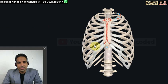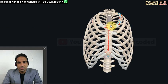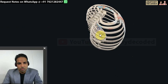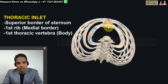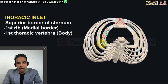Now let's see the boundaries of the thoracic inlet and the outlet. The upper opening is the thoracic inlet. The boundaries of the thoracic inlet are: on the anterior aspect, the superior border of the sternum, then the medial border of the first rib, and then the anterior border of the first thoracic vertebra.